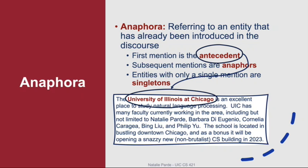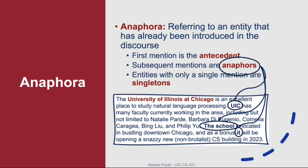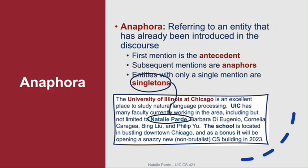In the example text here, the introductory 'University of Illinois at Chicago' would be an antecedent, since the referent to which it refers is mentioned numerous times in the text and this is the first mention. The other circled referring expressions would be anaphors, since they refer to the same referent but are not the first mention. The name circled here would be a singleton because it's mentioned just once in the text passage — there is nothing else referring to this referent.